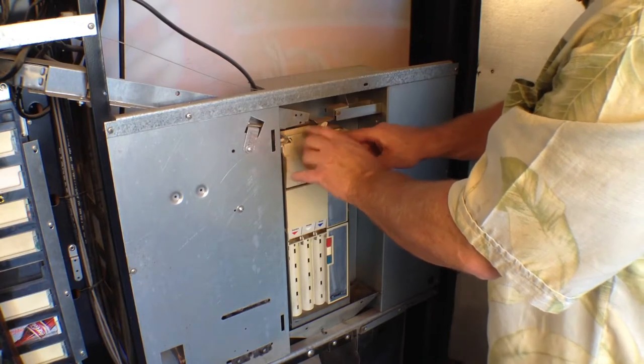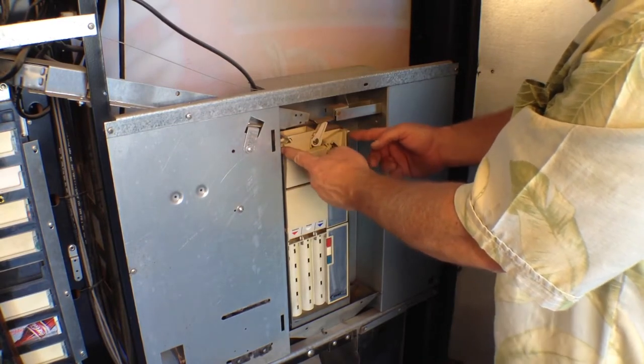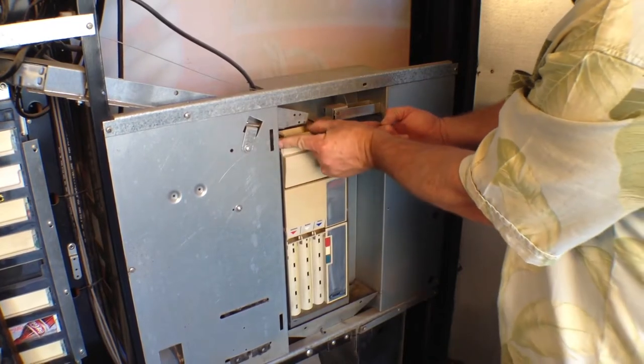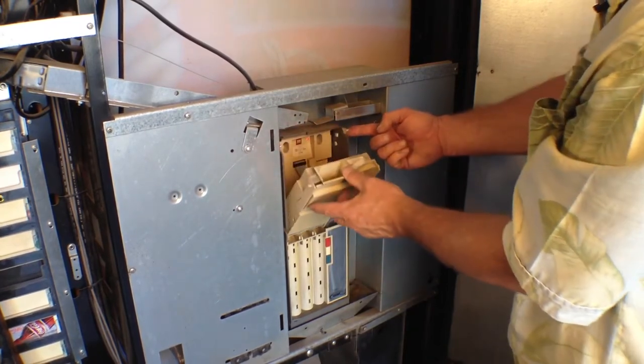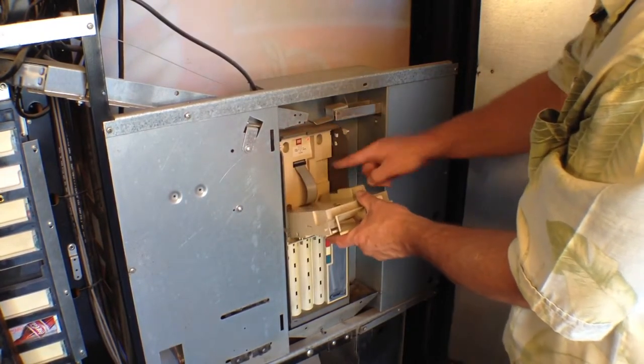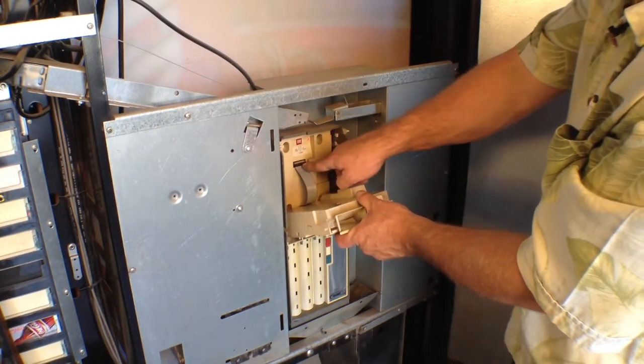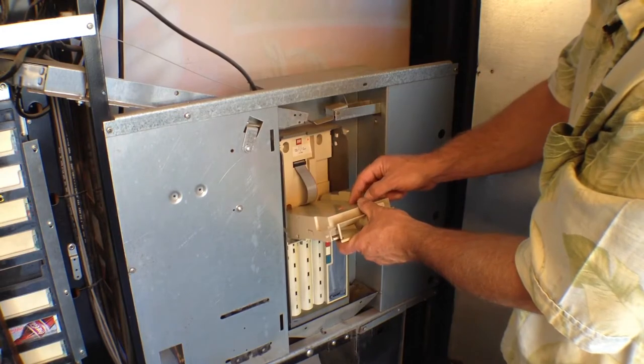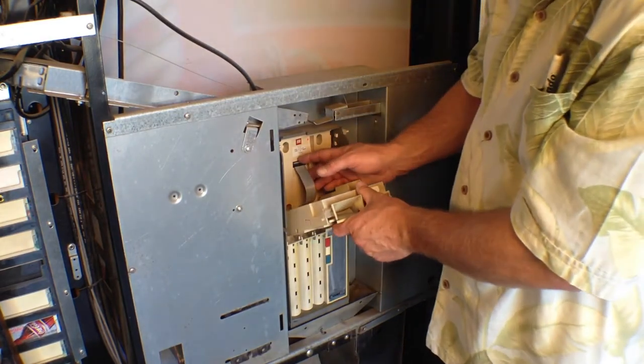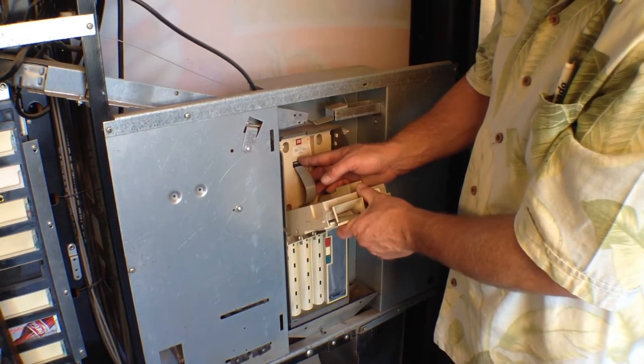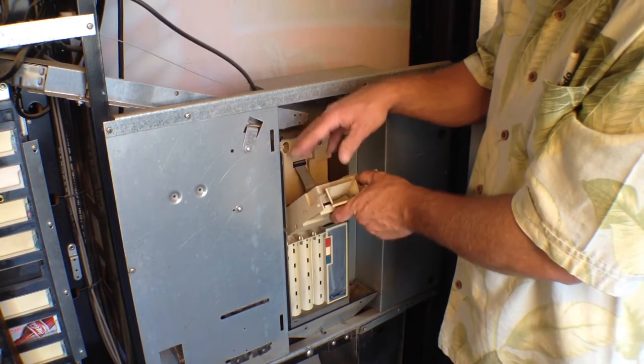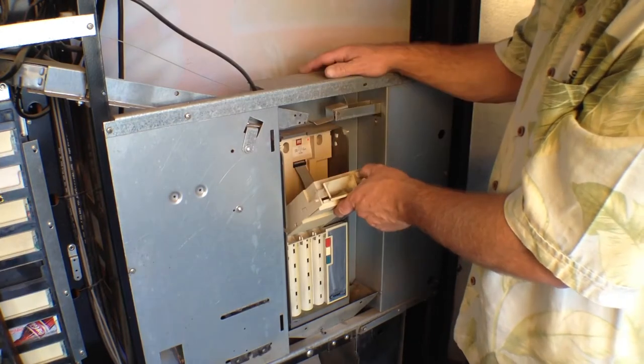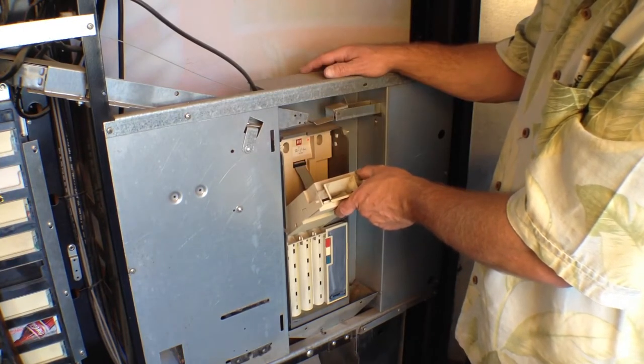Once that's done we can remove this piece. We do that by lifting up on these two tabs and then pulling the mech forward while holding up on the tabs. As you can see it's connected here with this wiring harness. It's important not to disconnect or connect this wiring harness while the machine is plugged in. That could actually damage your entire coin mech. So now before we proceed we're going to unplug the machine.